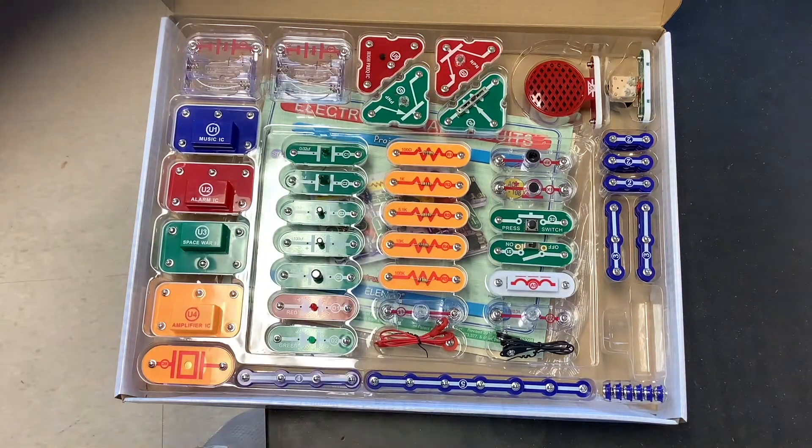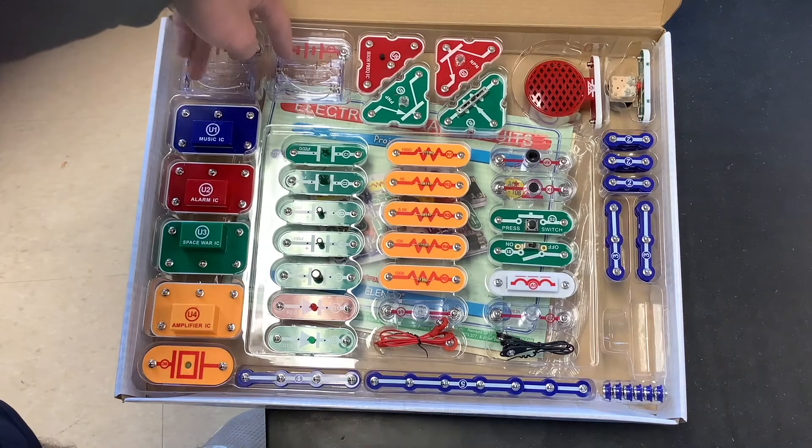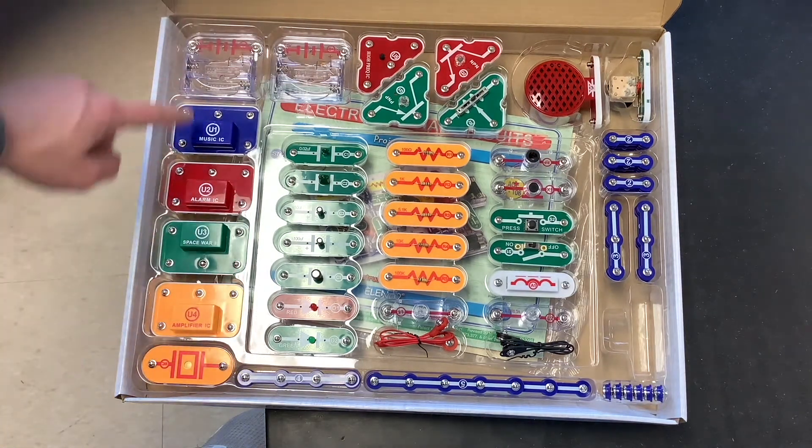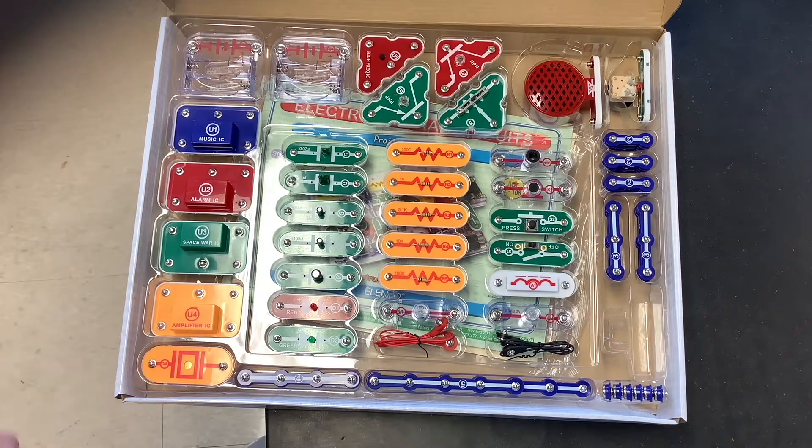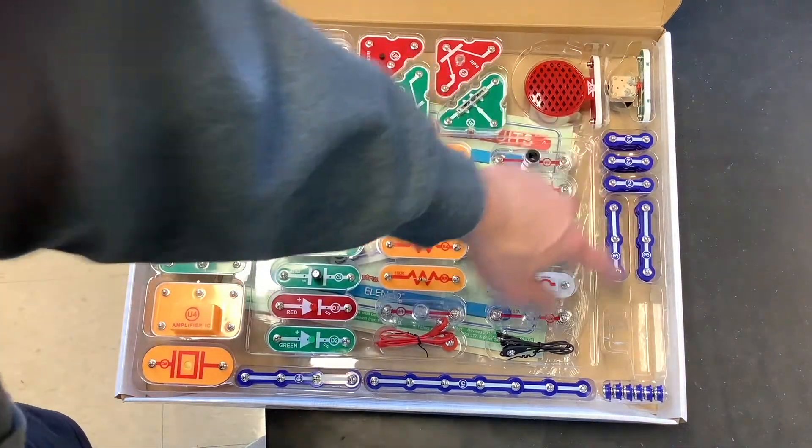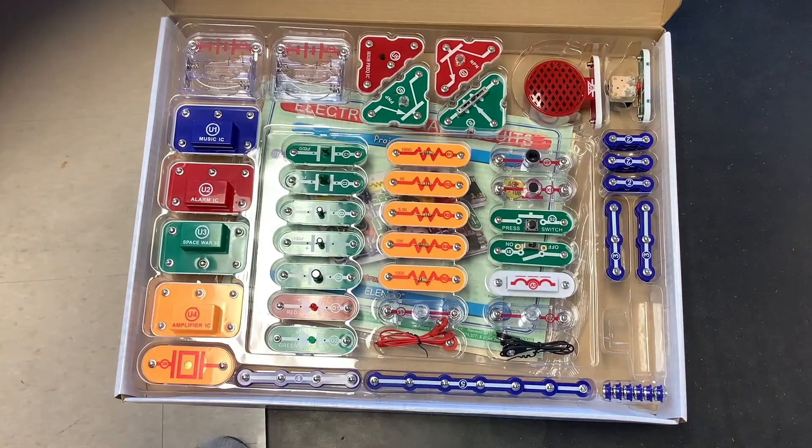We'll be using that later. Right here, these are your two battery packs. Over here, these are different alarm sounds. And then all these little blue things, these are all what we're going to be using as wires.